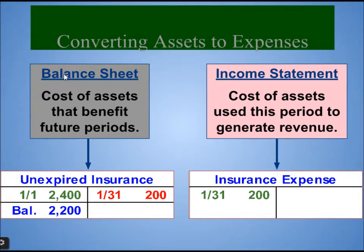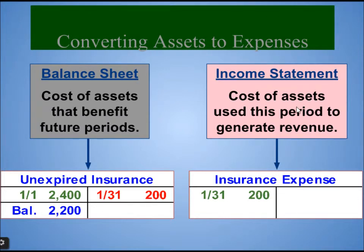On the balance sheet, the cost of the asset that benefits future periods: unexpired insurance was $2,400, and after crediting $200 for the first month, the balance of our asset for this insurance policy is $2,200. On the income statement, insurance expense appears as a debit of $200.